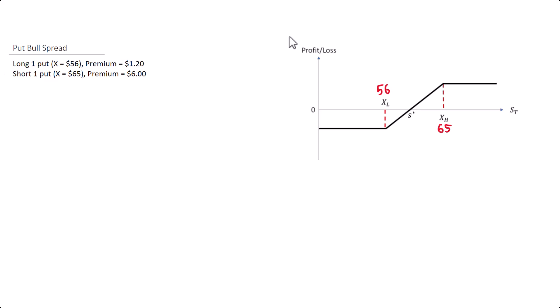We'll calculate the initial value of the strategy, where you buy a put with the lower strike and minus — meaning you short — the put option with the higher strike. So this would be $1.20 minus $6.00, giving us negative $4.80. So in this case it's a net credit, because the amount received from selling the put is more than what you pay.